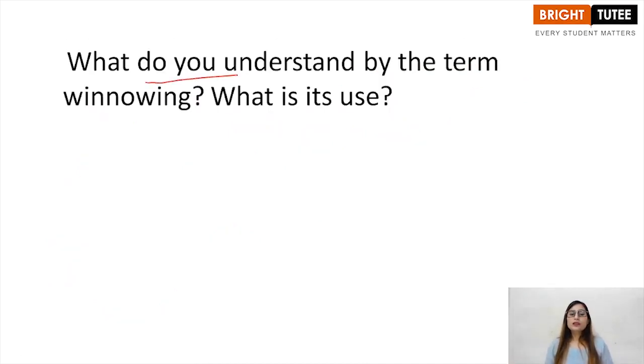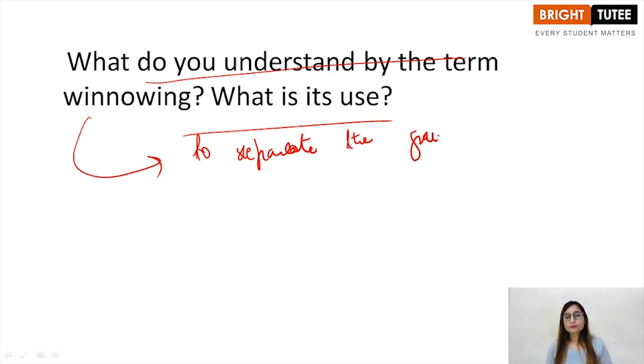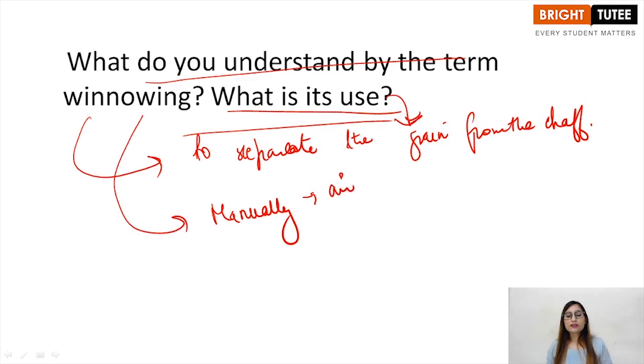What do you understand by the term winnowing, what is its use? Winnowing is used to separate the grain from the chaff. How is it done? It is done manually with the help of air. The air flows, you simply drop the mixture of grain and chaff. When the fan hits the mixture, because the chaff is lighter, it flows with the air, while because the grain is heavier, it falls down and collects at the bottom. So this is the manual method of winnowing.